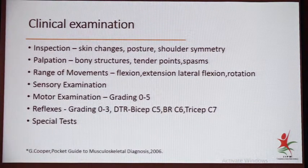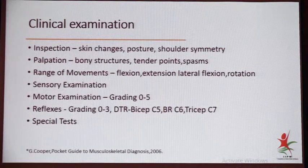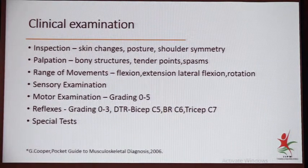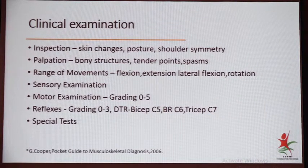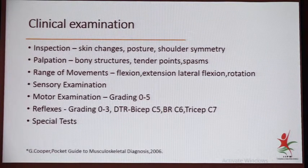Reflexes should be graded zero to three: zero is areflexia, one is hyporeflexia, two is normal, and three is hyperreflexia. Hyperreflexia indicates upper motor neuron disease; when there is a motor defect, you see zero to one. Biceps reflex denotes C5, brachioradialis denotes C6, and triceps denotes C7. This gives an easy clue to find out which nerve root is affected, because a patient may have multiple disc levels on MRI — but which one is producing the pain can only be determined by clinical examination.